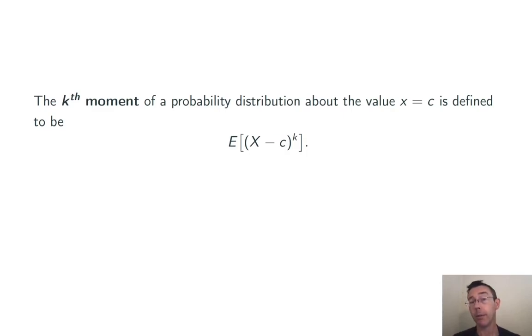The kth moment of a probability distribution about the value x equals c is defined as the expected value of (x minus c) to the k. Here we're taking k to be some positive integer. Now on its face this definition is pretty abstract and gets more real when we start looking at specific values for c and k.